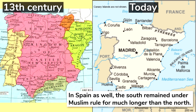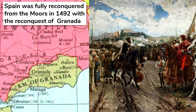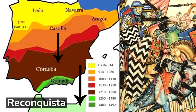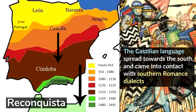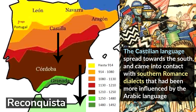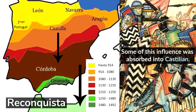In Spain as well, the south remained under Muslim rule for much longer than the north. Spain was fully reconquered from the Moors in 1492, with the reconquest of Granada, the last remnant of Muslim rule. During the Reconquista, or Reconquest, the Castilian language spread towards the south, and came into contact with southern Romance dialects that had been more influenced by the Arabic language of the Muslim rulers. These dialects are collectively referred to as Mozarabic dialects. Some of this influence was absorbed into Castilian.